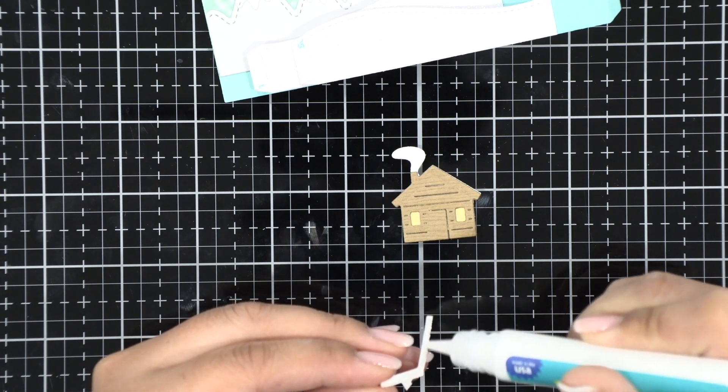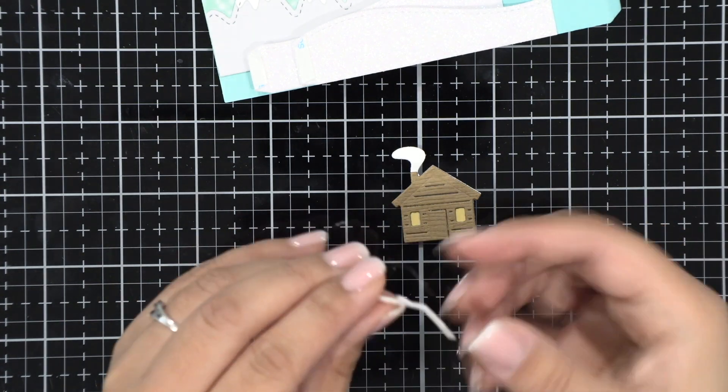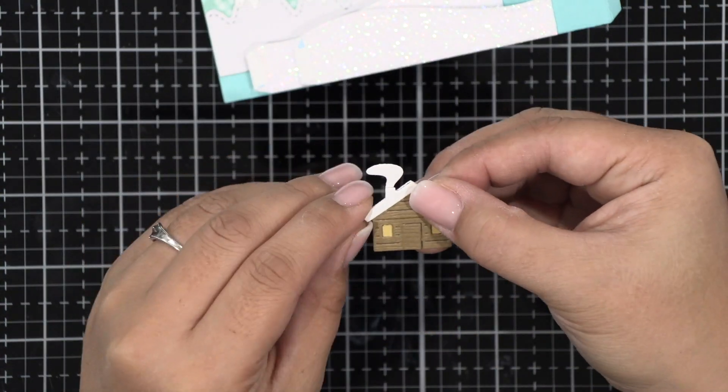I'm going to add my white roof just to kind of imitate a little bit of snow in the background inside that shadow box.